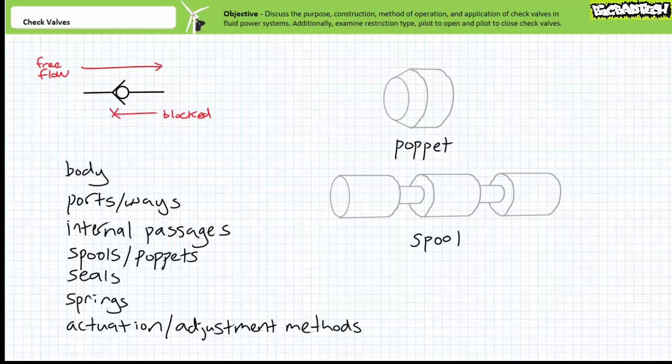Spools, in contrast, are cylindrical devices with lands and valleys that selectively connect or disconnect the internal passageways of the valve. Poppets and spools may include seals like O-rings to prevent leakage.